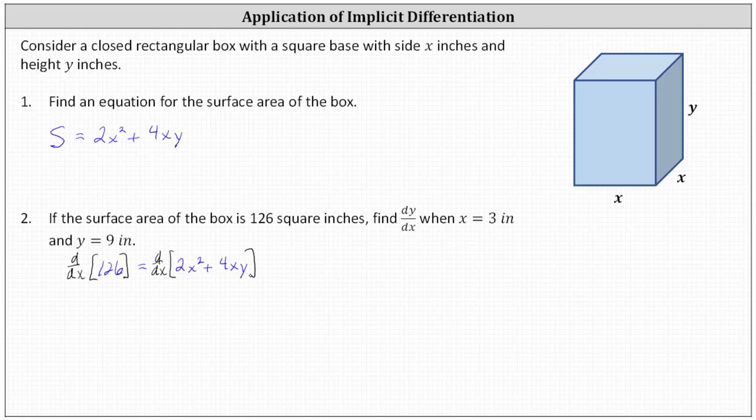Remember, when performing implicit differentiation, when we differentiate an x term, we differentiate like we normally do. When we differentiate a y term, we need to apply the chain rule. We differentiate with respect to y and then multiply by a factor of dy/dx.